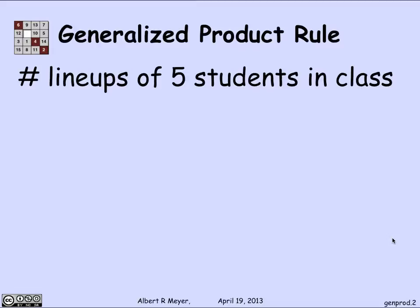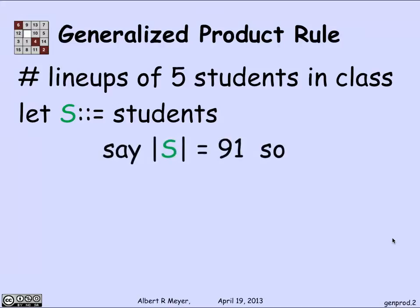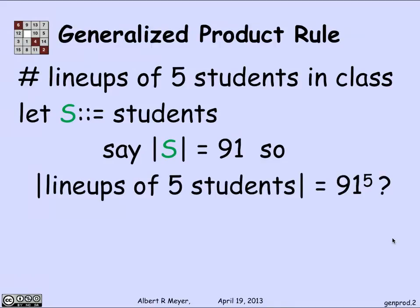Suppose I wanted to count the number of lineups of five students in the class. So if I let S be the number of students, and let's say for the afternoon session S is 91, then the number of lineups of five students, if I use the ordinary product rule, I would get, I'm talking about S to the fifth, that is sequences of length five of elements of S.